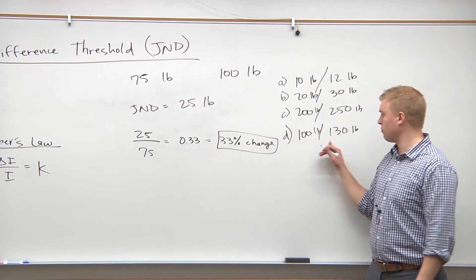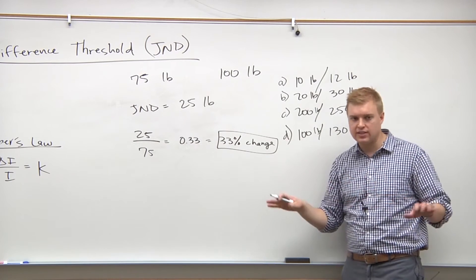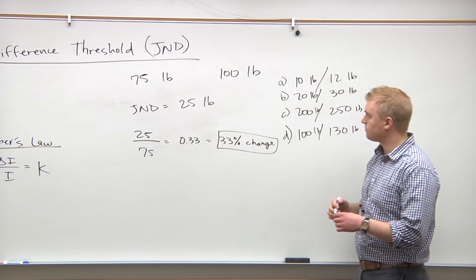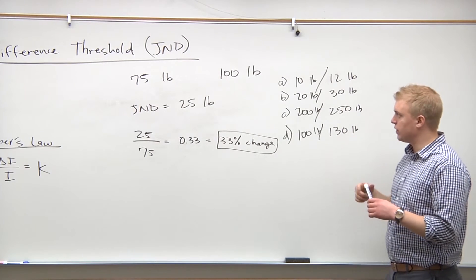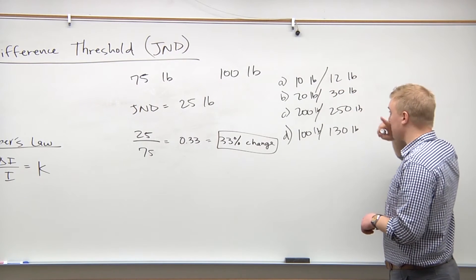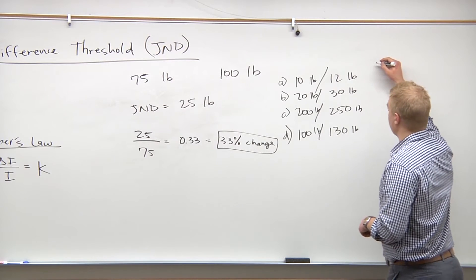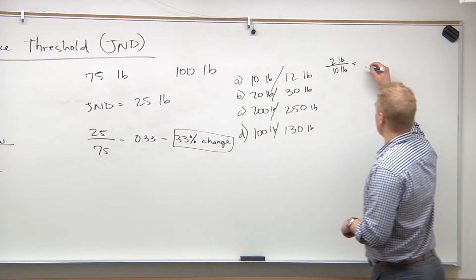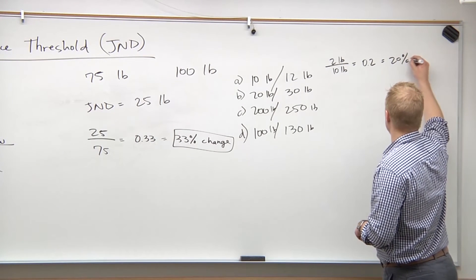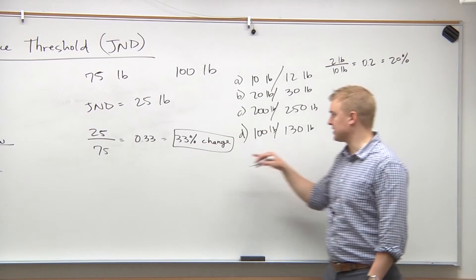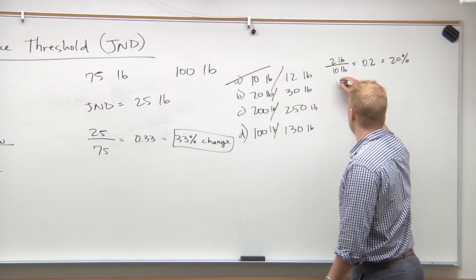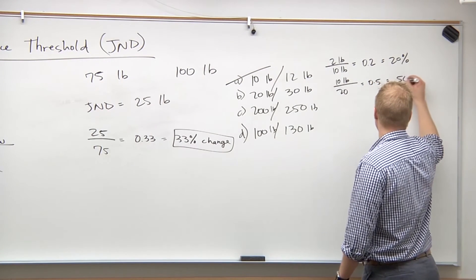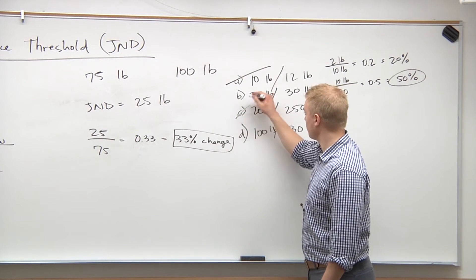Our answer choices are all pretty reasonable, so let's work through them one by one. For A, the JND is 2 pounds over the original stimulus of 10, giving 0.2 — a 20 percent change. You would not notice that, since it's less than 33 percent, so mark off A. For B, the JND is 10 pounds over the original of 20, giving 0.5 — a 50 percent change. Yes, he would notice that difference.